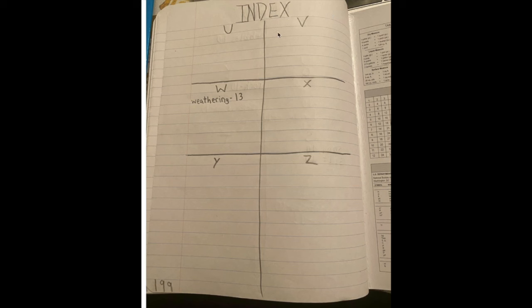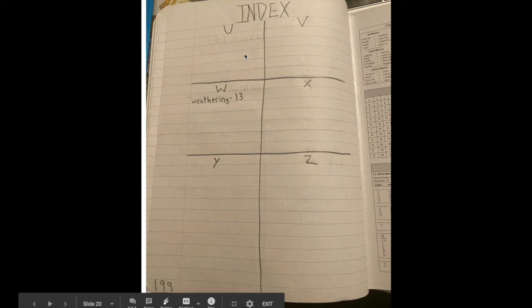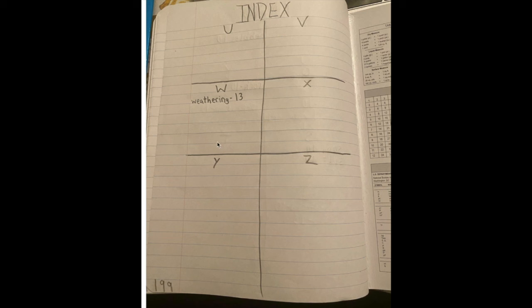Then we have the very last page of our book, 199, with letters U, V, W, X, Y, and Z. Please make sure you add this vocabulary word to page 13.